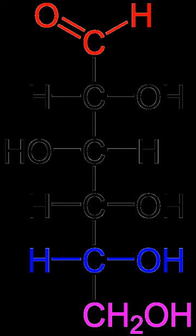Sucrose is the most abundant disaccharide, and the main form in which carbohydrates are transported in plants. It is composed of one D-glucose molecule and one D-fructose molecule. The systematic name for sucrose, O-α-D-glucopyranosyl-(1→2)-D-fructofuranoside, indicates four things: its monosaccharides (glucose and fructose), their ring types (glucose as a pyranose and fructose as a furanose), how they are linked together (the oxygen on carbon 1 of α-D-glucose is linked to C2 of D-fructose).